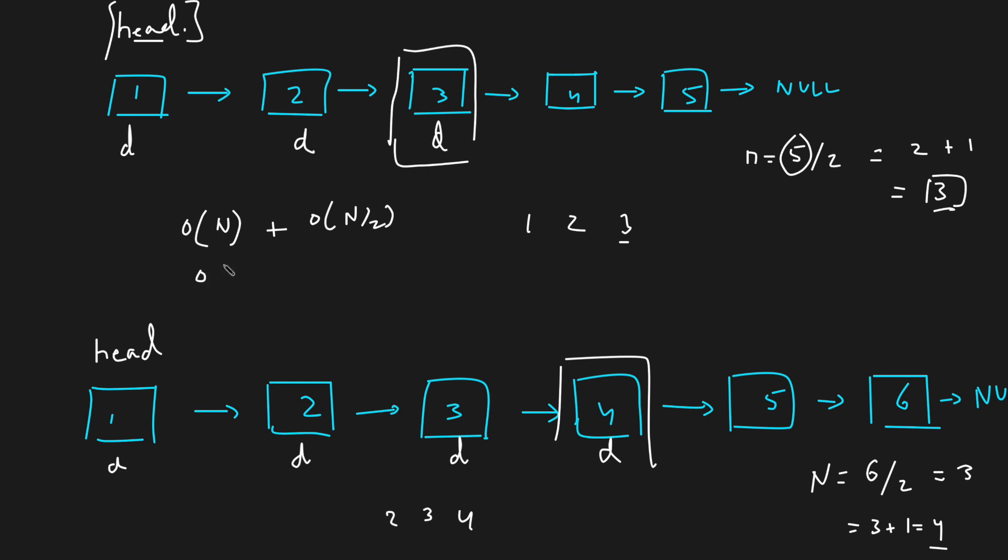The time complexity of this brute force approach is O(n) for counting nodes plus O(n/2) for the second traversal, giving O(n + n/2). The space complexity is O(1).